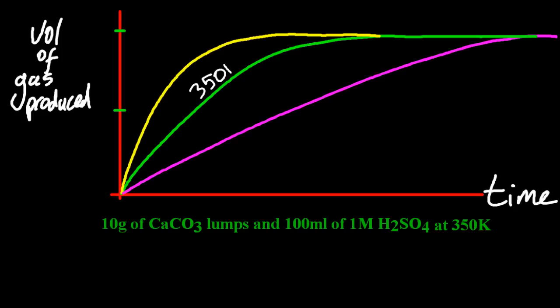The line with the steepest gradient at the beginning is a faster reaction, and that's going to have the higher temperature that the reaction was carried out at. And the less steep line, well, that's going to have a lower temperature. So what's the reason behind that?